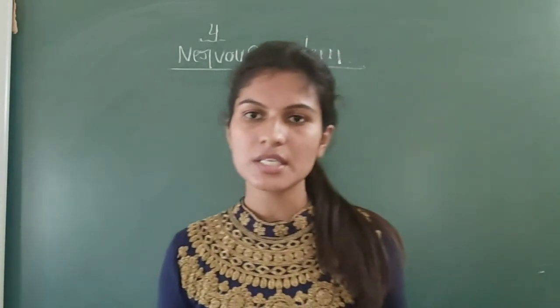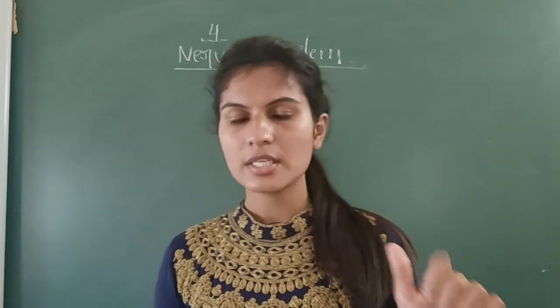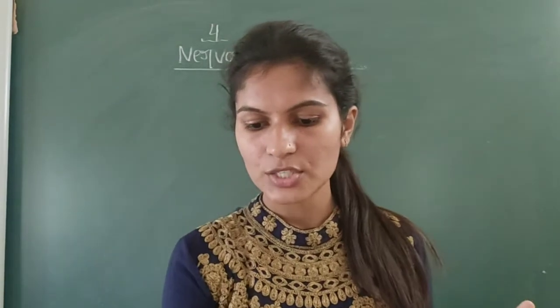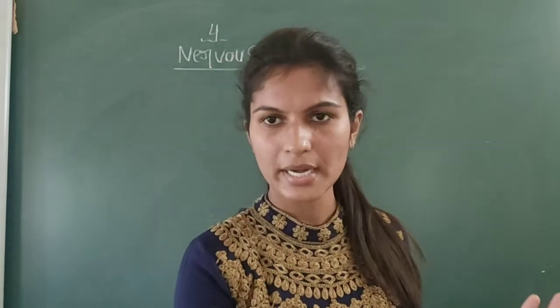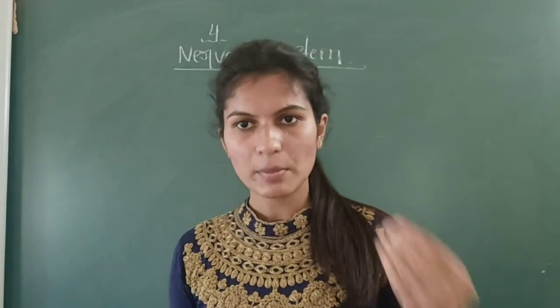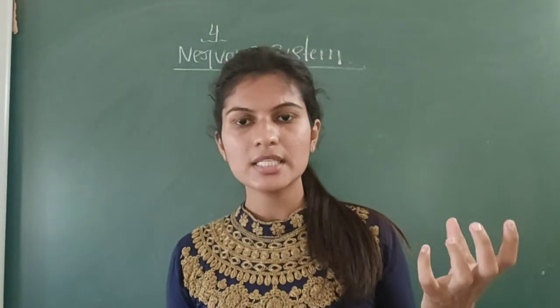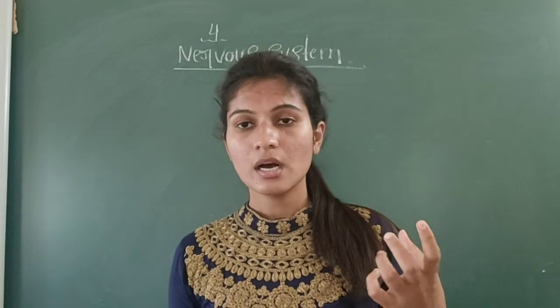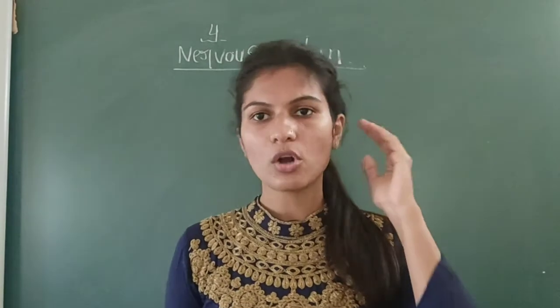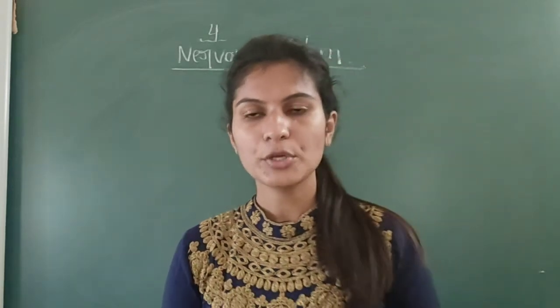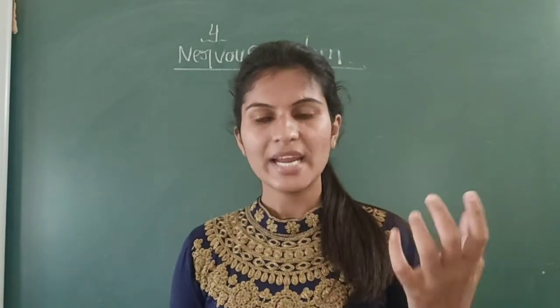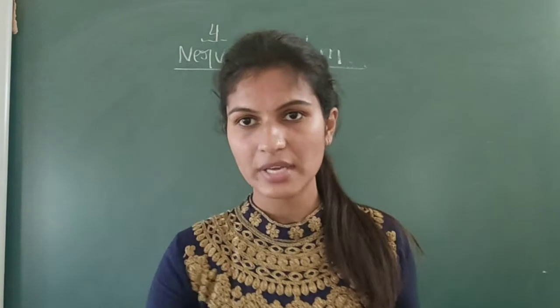This nervous system consists of brain, spinal cord, and nerves. In the previous class we discussed the brain. The brain is the control center of our body and it is protected by a hard bony structure called the skull. An adult human brain is about 1.5 kg.